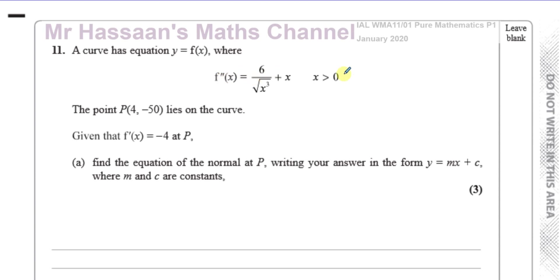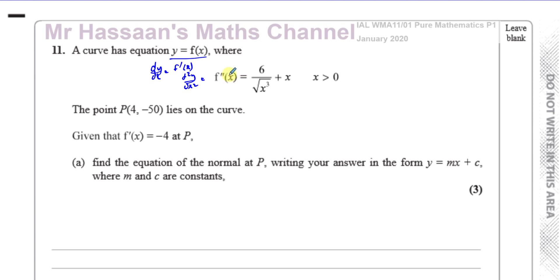f double dash x means the second differential of this original function — it's been differentiated. When you differentiate it you get dy/dx, which is another way of saying f dash of x, and another way of saying f double dash x is d²y/dx². It's been differentiated twice.